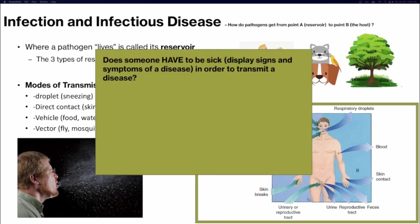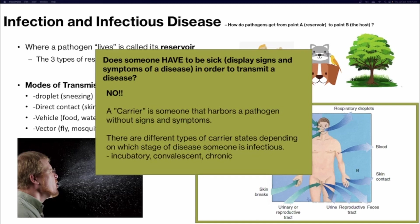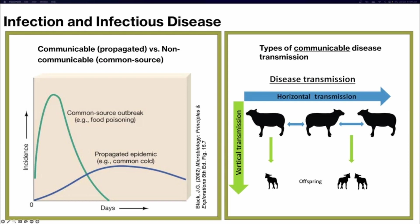Does someone have to be sick and display signs and symptoms in order to transmit a disease? Absolutely not — there are carriers, someone who harbors a pathogen without showing signs and symptoms. Different types of carrier states include: incubatory carriers, who can spread the pathogen during the incubation stage before experiencing signs and symptoms; convalescent carriers, who after getting better still have enough pathogens to shed and transmit to someone else; and chronic carriers, who can carry a pathogen over months or years.